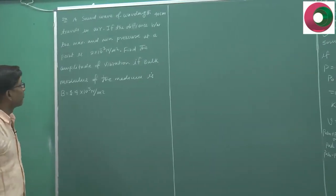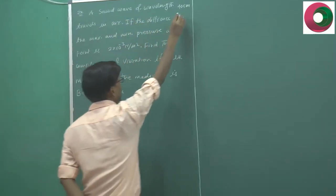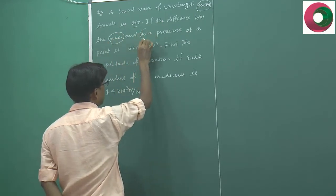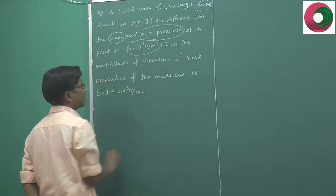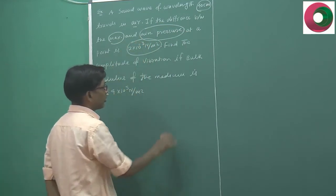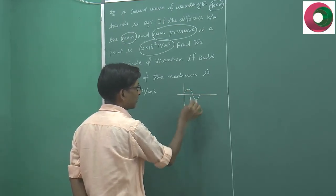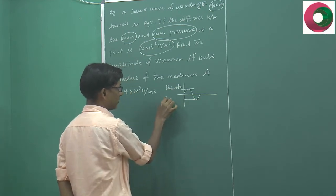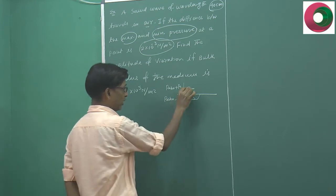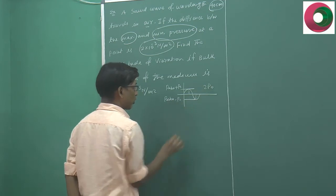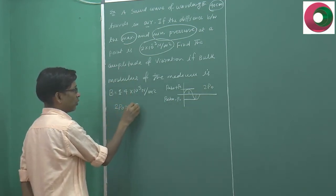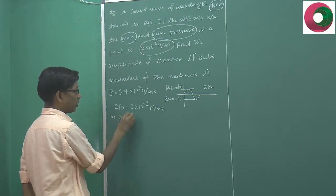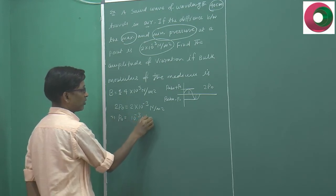Next example: a sound wave of wavelength 40 cm travels in air. The difference between maximum and minimum pressure at a point is 2 × 10⁻³ N/m². Maximum pressure is P_atm + P₀ and minimum is P_atm - P₀, so their difference is 2P₀. Therefore 2P₀ = 2 × 10⁻³ N/m², giving pressure amplitude P₀ = 10⁻³ N/m².